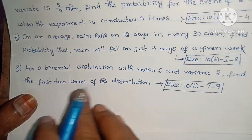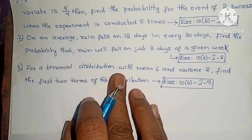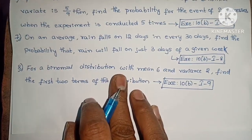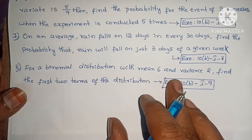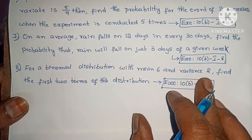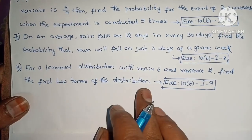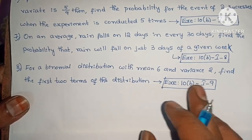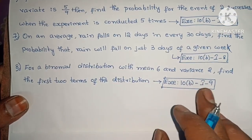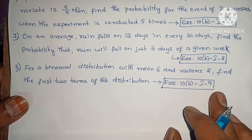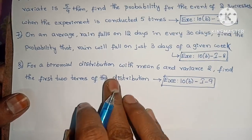For a Binomial distribution with mean 6 and variance 2, find the first 2 terms of the distribution. Exercise 10, Section I, problem 9.